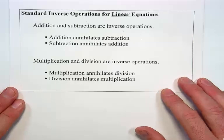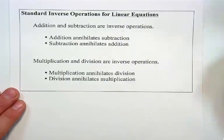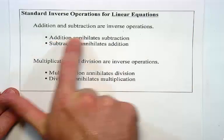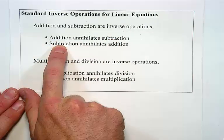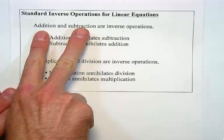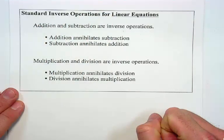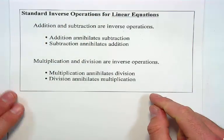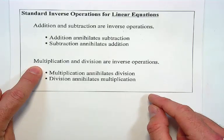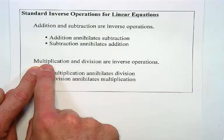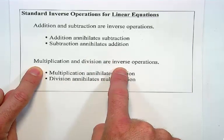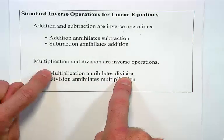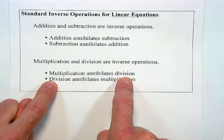Generally, when we solve linear equations, we use the following inverse operations. We annihilate addition with subtraction and get rid of subtraction with addition. In other words, addition and subtraction are inverse operations. Similarly, because multiplication and division show up in linear equations, multiplication and division are inverse operations. We get rid of division with multiplication and multiplication with division.